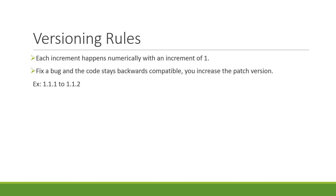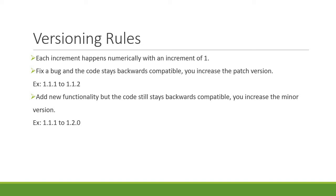When you add new functionality but the code still stays backwards compatible, you increase the minor version. But this time you also reset the patch version to 0. For example, 1.1.1 to 1.2.0.